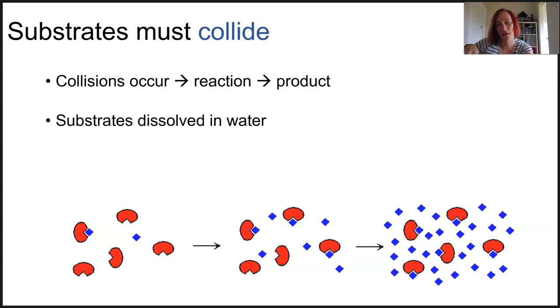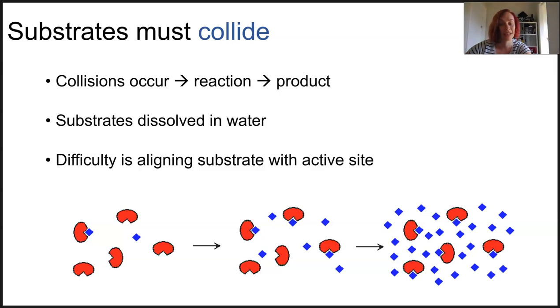It allows for the mobility of molecules, but it also means there's so much space for them to move around. Because of the difficulty in aligning these substrates in the active site, many things impact the collisions occurring, and therefore the overall activity of the enzyme.